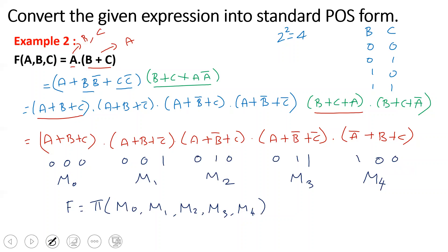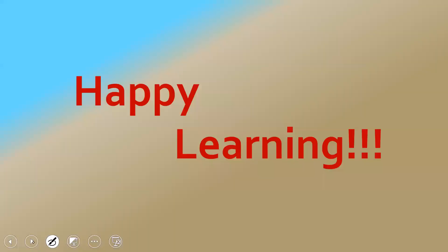So this is how you convert a minimal POS into a standard or canonical POS form — very simple. Next, two more problems are solved. Please tell us in the comments section if you want more. Subscribe to our channel so you don't miss future videos. Keep learning. Happy learning.